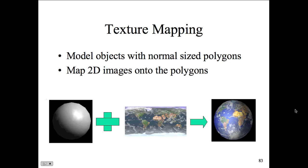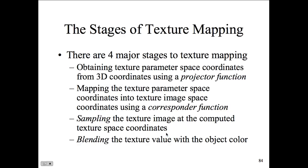You can paint polygon by polygon or object by object. For example, making a wood floor: take a picture of wood and texture map it onto a wireframe of a floor with boards — you'd get a very realistic looking floor. The same applies for objects like the earth. The stages of texture mapping: obtain texture parameters or space coordinates from 3D coordinates using a projector function; then map the texture parameter space to the texture image.